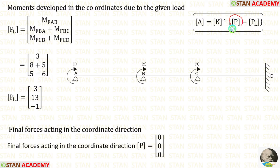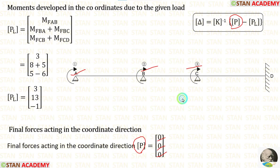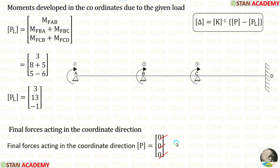Now let us make the P matrix. The P matrix has three values because there are three coordinates. All values are zero because in the given beam there is no overhanging.